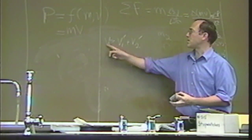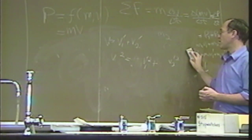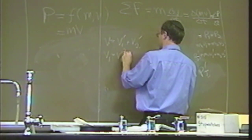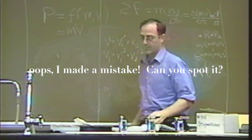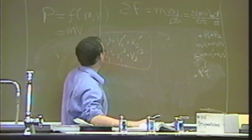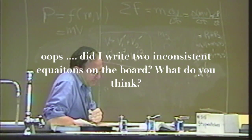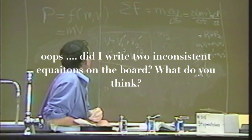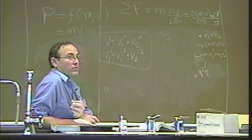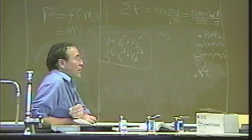Now look at those two equations — can both be true simultaneously? This says V1 equals V1 prime plus V2 prime. If you square the left side, you get V1 squared. But if you square the right side, you get V1 prime squared plus V2 prime squared plus 2 V1 prime V2 prime. That's not equal to just V1 prime squared plus V2 prime squared, so both equations can't be true in general.